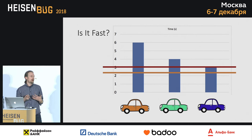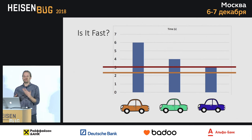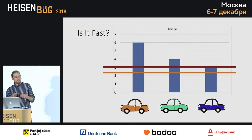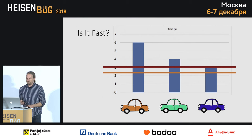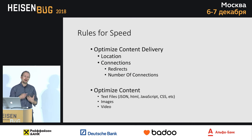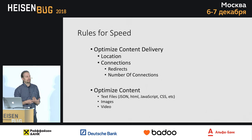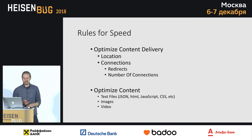So what are we going to do to speed up our application? The rules for speed when downloading content from the internet are: optimize the delivery, and then optimize the content. We'll walk through all of these.